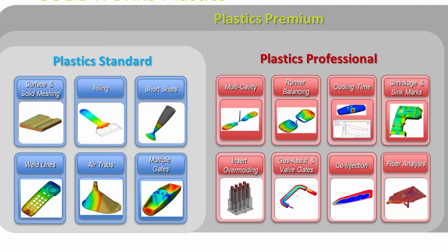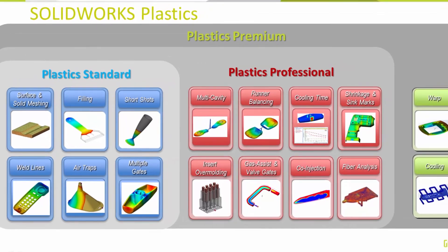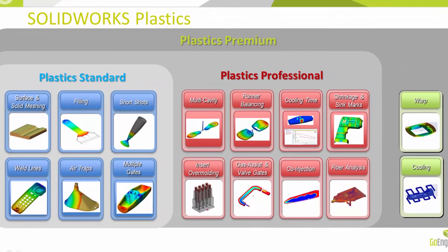Plastics Professional also allows you to test runner systems, clamping tonnage, and estimate cycle times, allowing you to avoid costly mold rework and create more accurate quotes. Plastics Premium adds further functionality for the manufacturer by allowing you to simulate cooling lines and predict part warpage that can be critical to manufacturing profitability.